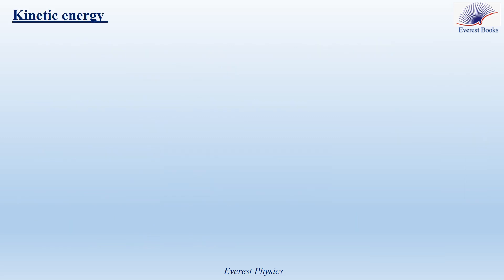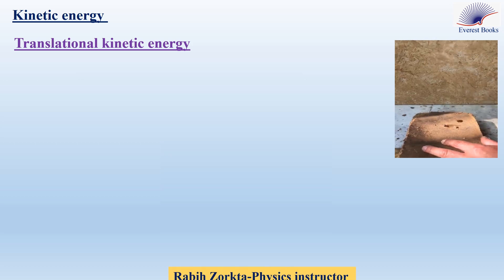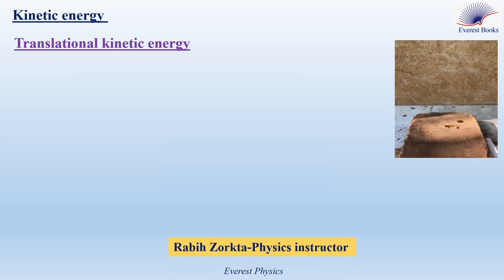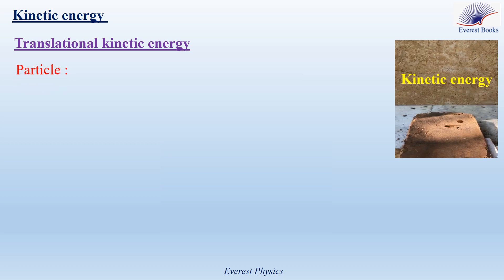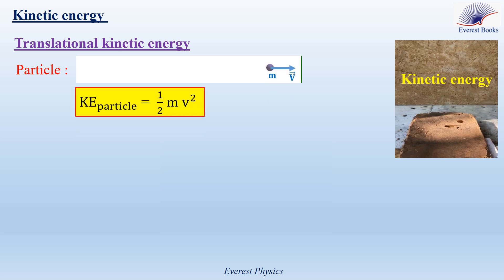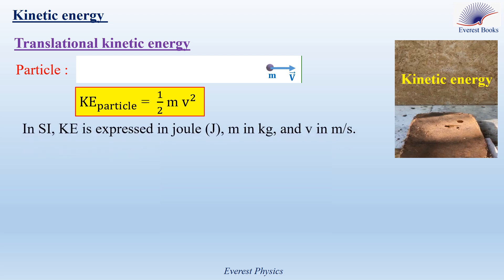Kinetic energy — translational kinetic energy. The moving hammer drives the nail deep into the piece of wood. So the moving hammer possesses a certain form of energy called kinetic energy. What is the expression of this form of energy? For a particle moving with speed V and having mass M — recall that a particle is an object having mass but zero size — the kinetic energy of a particle is given by ½mv².